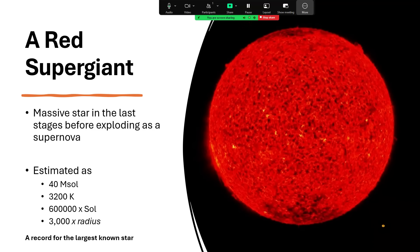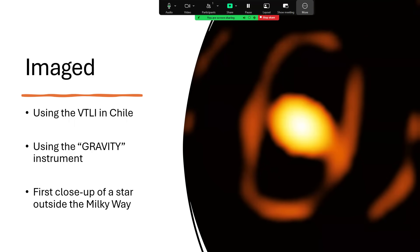And this was, at the time, a record for the largest known star. Now, the image that I showed you at the beginning there was made by the VLTI, the very large telescope array in Chile, acting as an interferometer using their gravity instrument. And it's the first close up picture of a star outside the Milky Way.